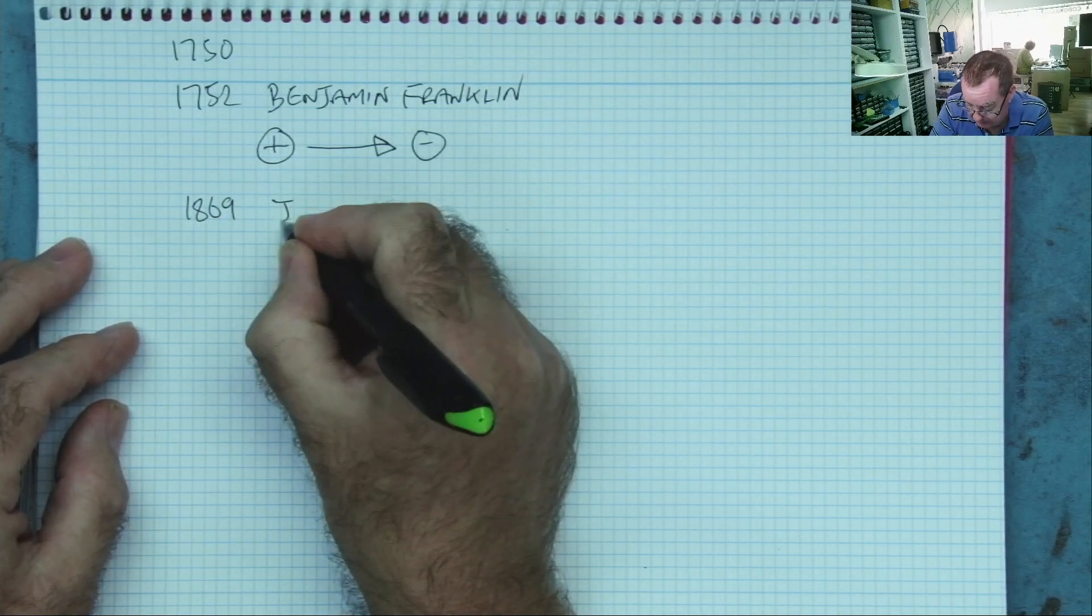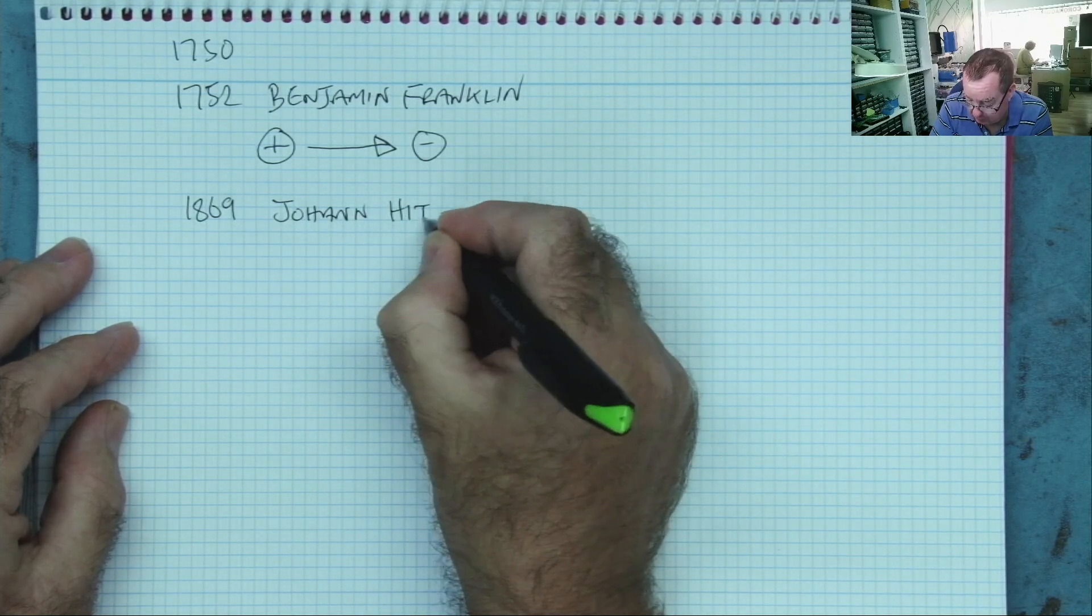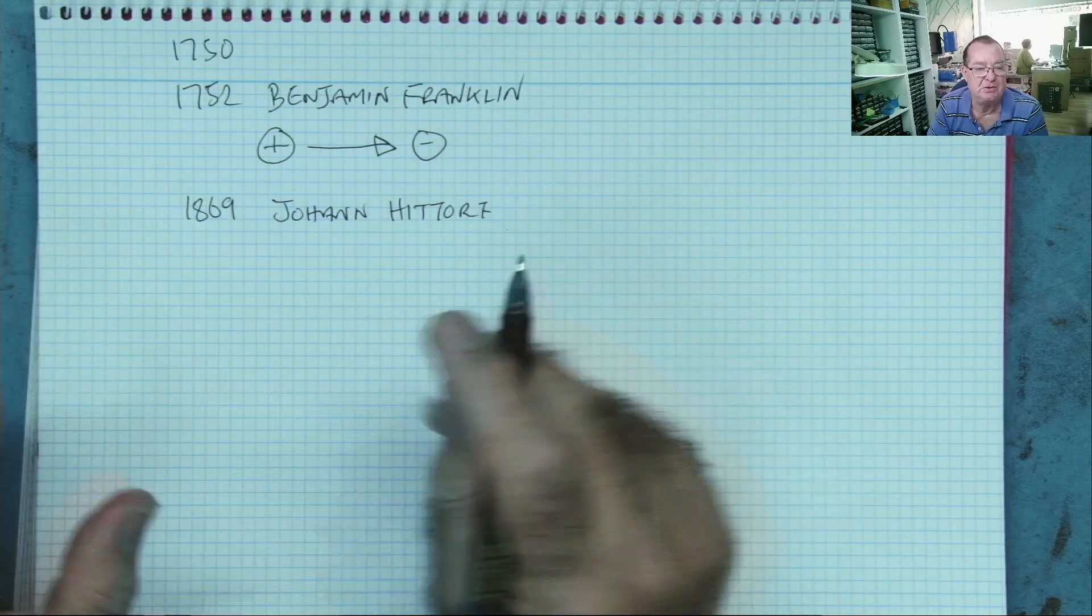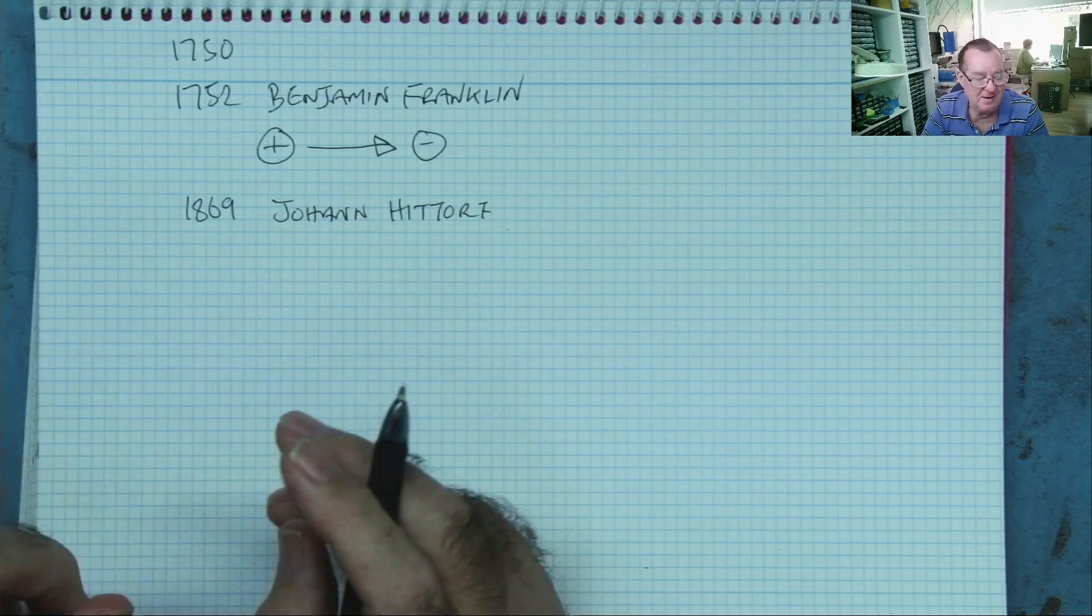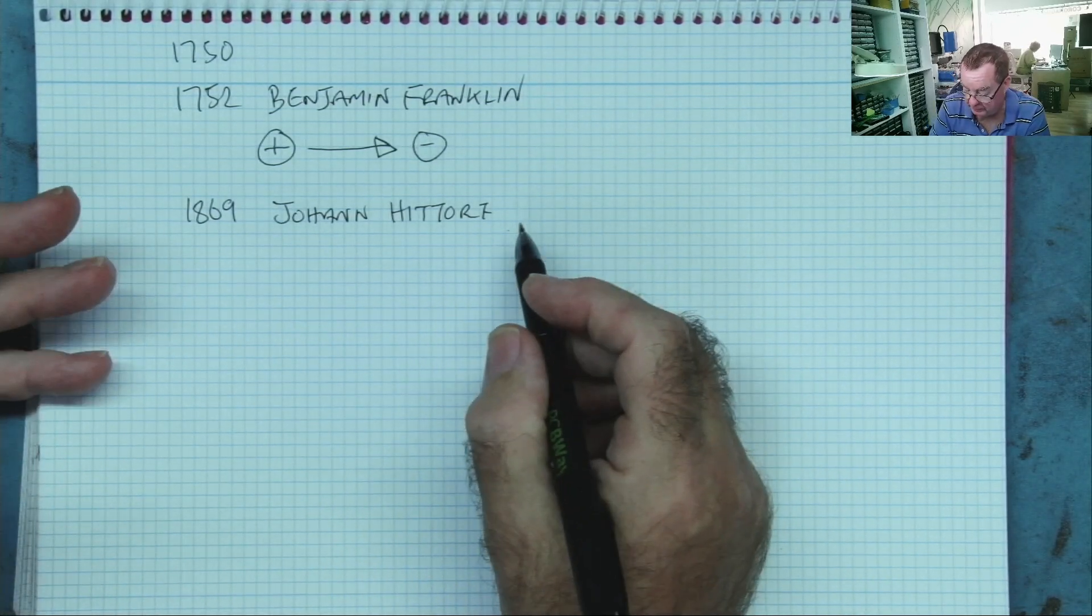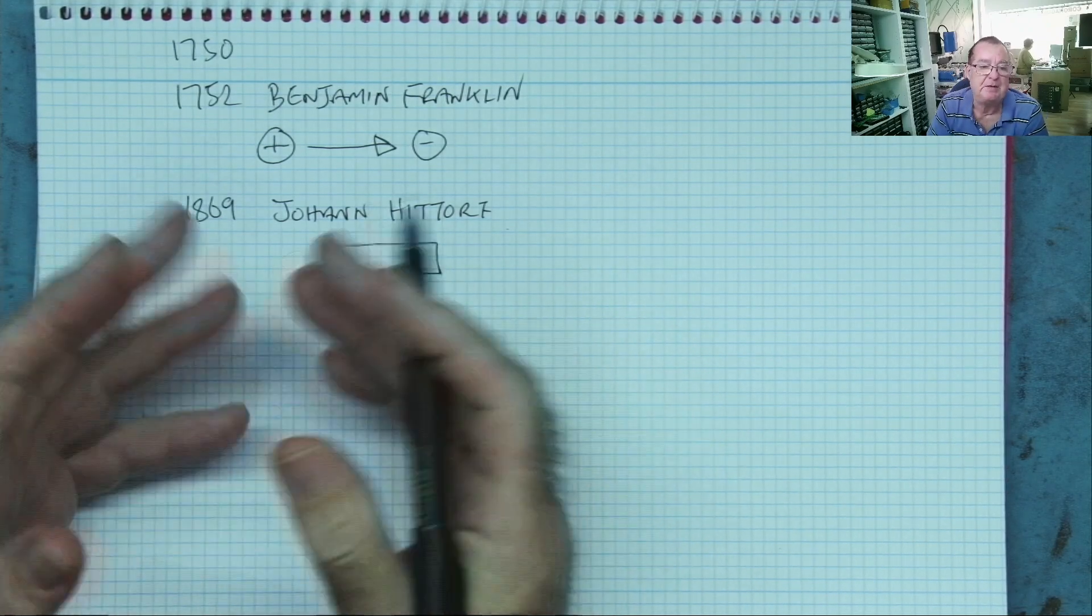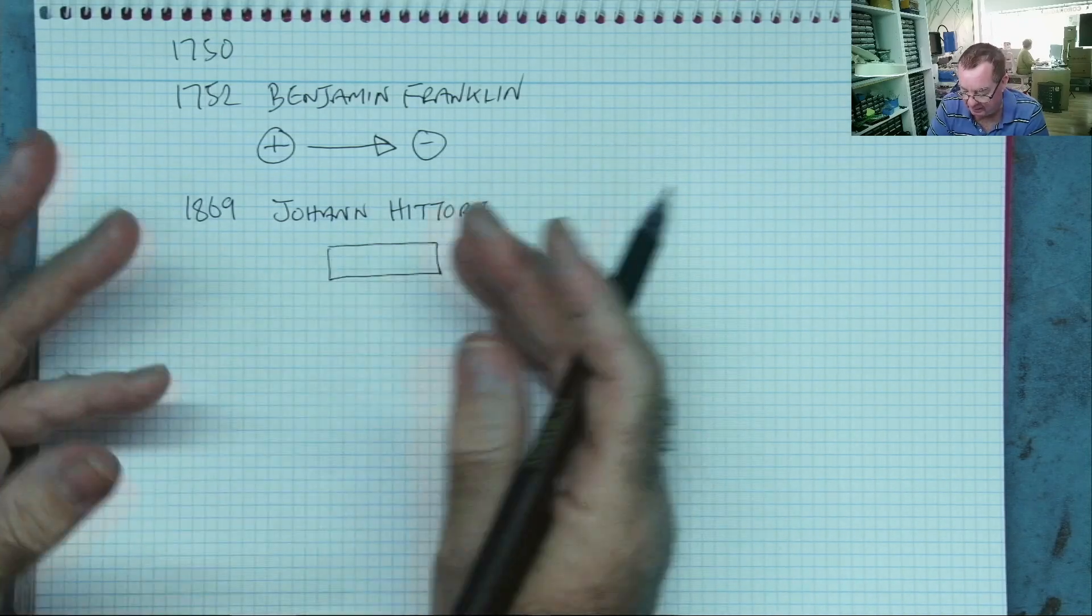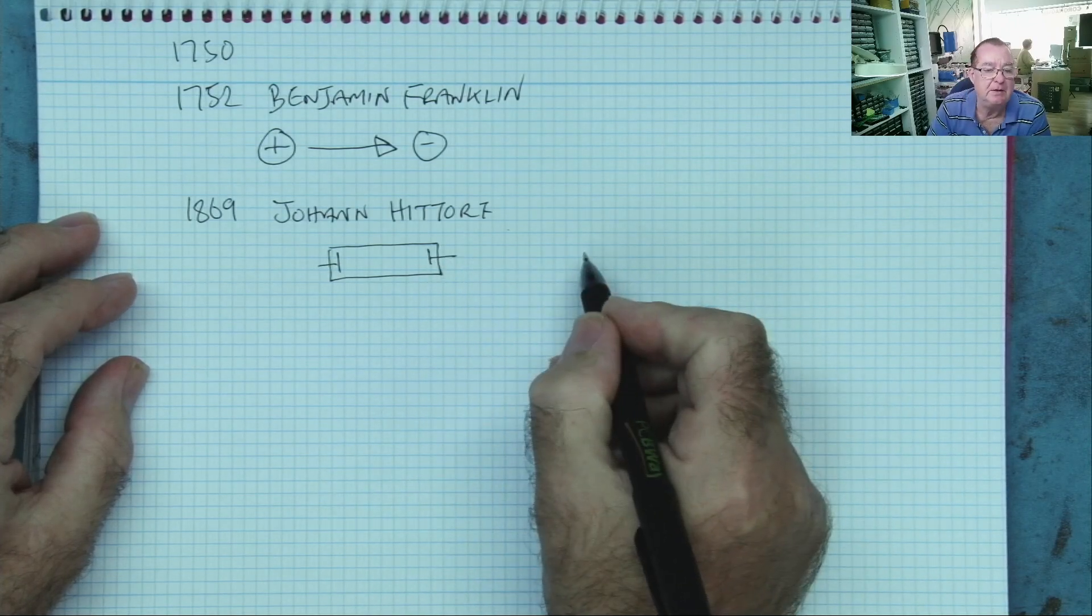Hundreds of books were written, thousands of papers were written. Universities and scientists studied this, and everybody knew that electricity flows in a current from positive to negative. And all was okay—many inventions and things were built and they all worked based on this theory. Everything was working.